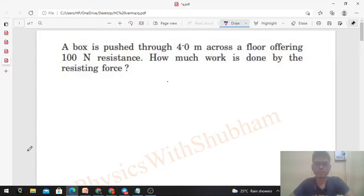Okay, hi everyone, so let's see this problem. A box is pushed through four meters across a floor offering hundred Newton resistance. How much work is done by the resisting force? Fine, so everything is given, right? Distance—I mean the displacement of the block—is given, four meters.